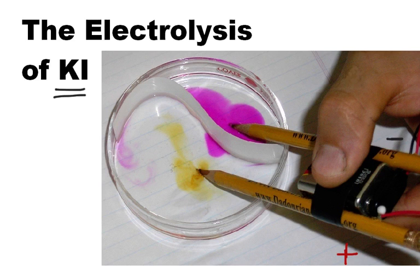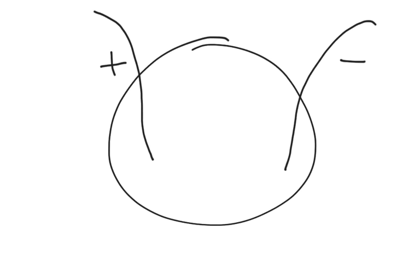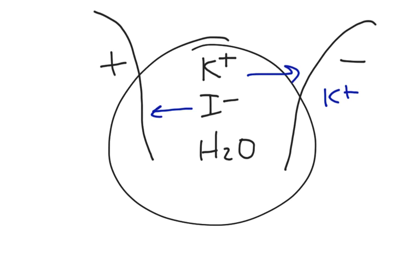Let's see if we can figure out what's happening. If we have a petri dish with a positive wire and a negative wire, in the solution there are potassium ions, iodide ions, and water. If you were a positive potassium ion, you would move over to the negative side. And the same way, the iodide ions would move over to the positive side.